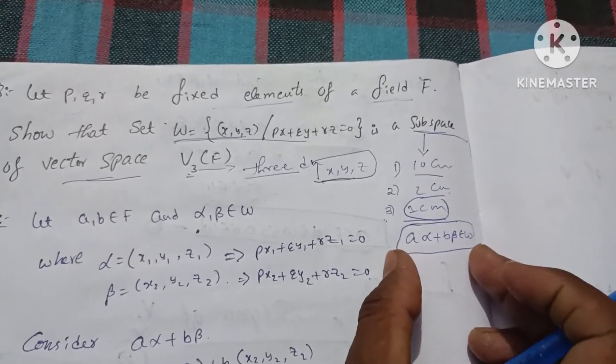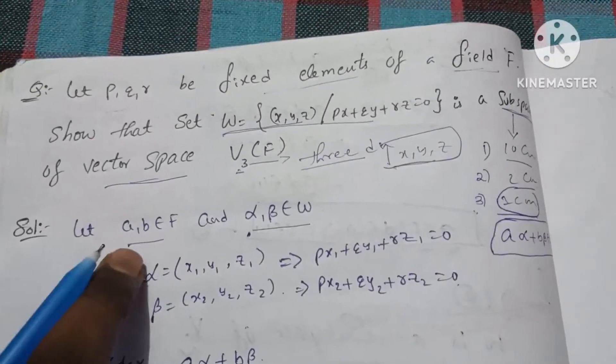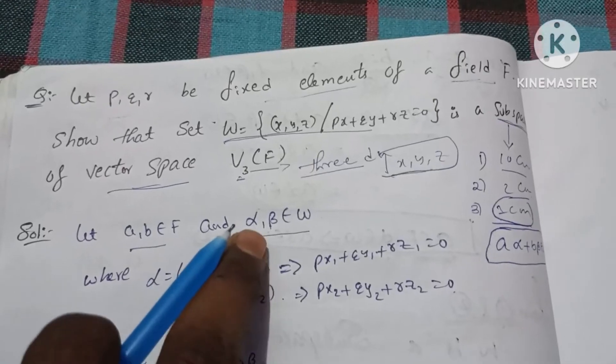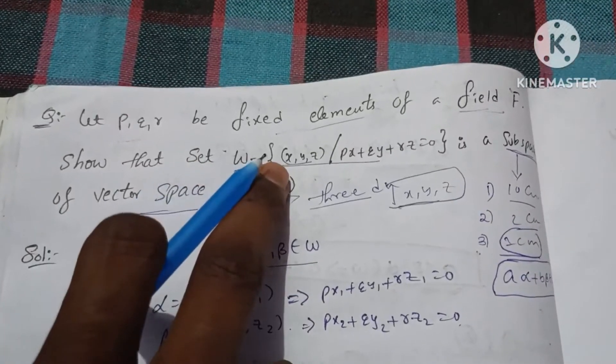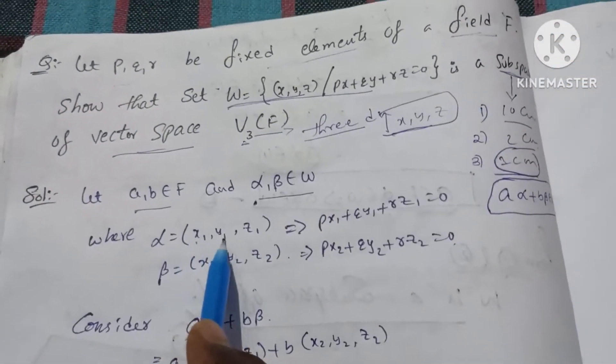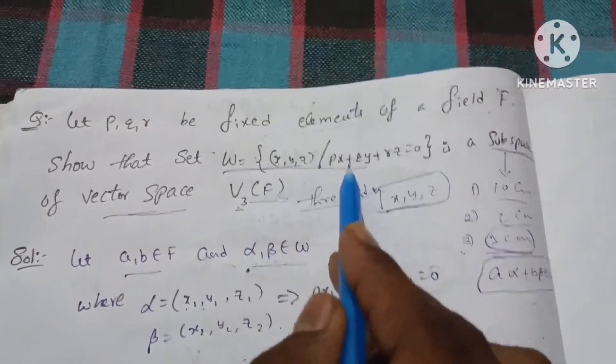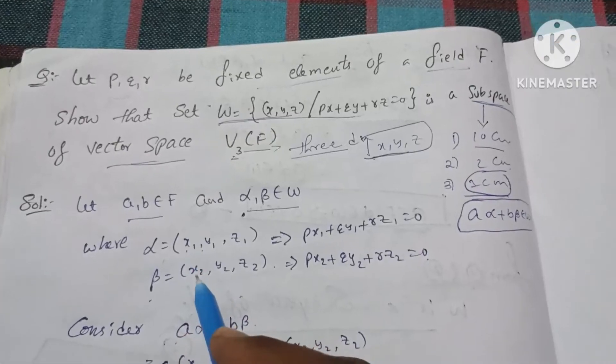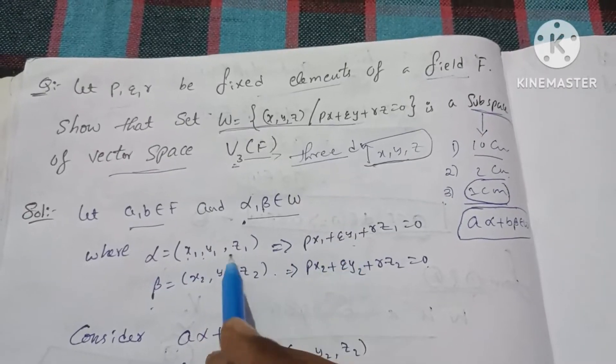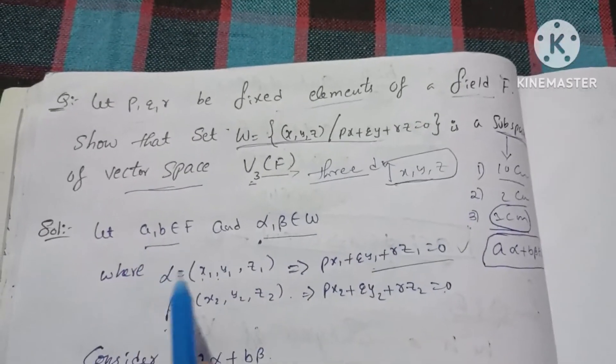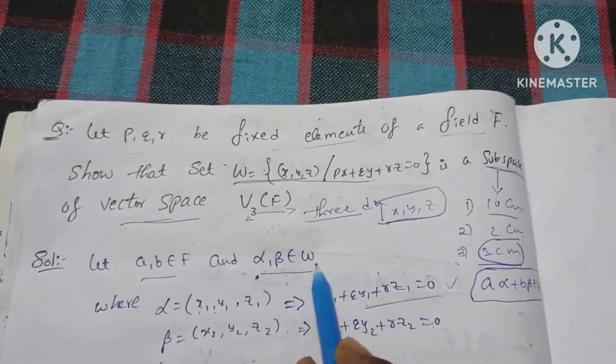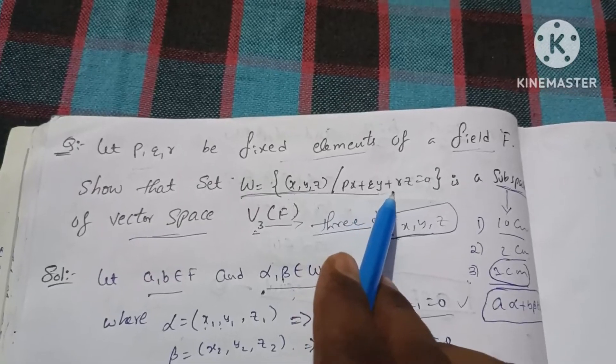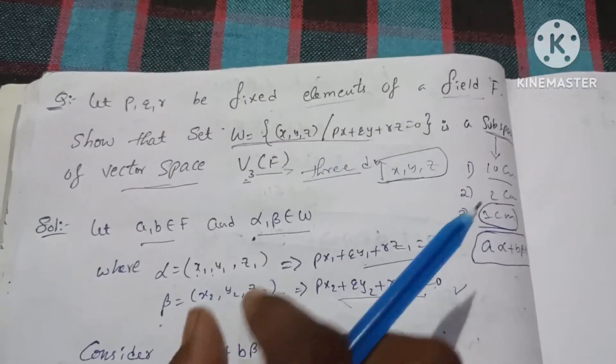Solution: Let a, b belongs to F, alpha, beta belongs to W. So elements alpha is equal to (x1, y1, z1), so px1 plus qy1 plus rz1 is equal to 0. Beta is (x2, y2, z2), so px2 plus qy2 plus rz2 is equal to 0. That's the elements equation.